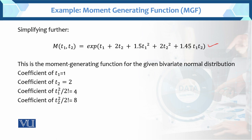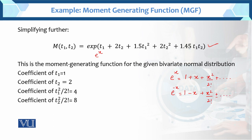Now let us recall how to solve this. This is the exponential function. We know that e^x = 1 + x + x²/2! + ... and e^(−x) = 1 − x + x²/2! + ... So for e^x, how do we expand it? The term x here is: t1 + 2t2 + 1.5t1² + 2t2² + 1.45t1t2.